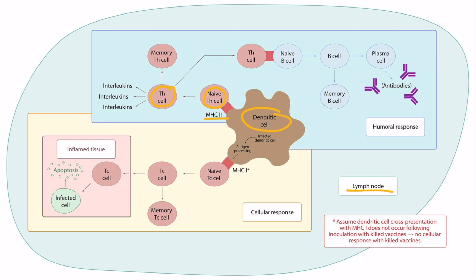One of those roles is to release interleukins. The interleukins released by the T helper cell depend on the T helper cell subtype — for example, Th1 versus Th2. These interleukins can enter the blood and from there exert their effect. That's the first thing T helper cells do when they're activated.